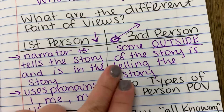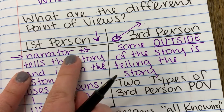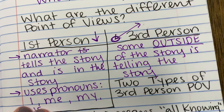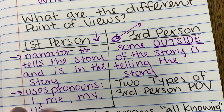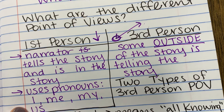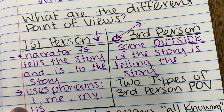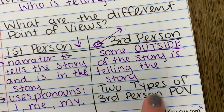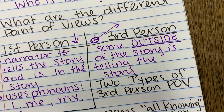I forgot to tell you something super important with third person. First person uses the pronouns I, me, my, us. These are important indicators of what the point of view is, and I forgot to tell you what it is for third person.